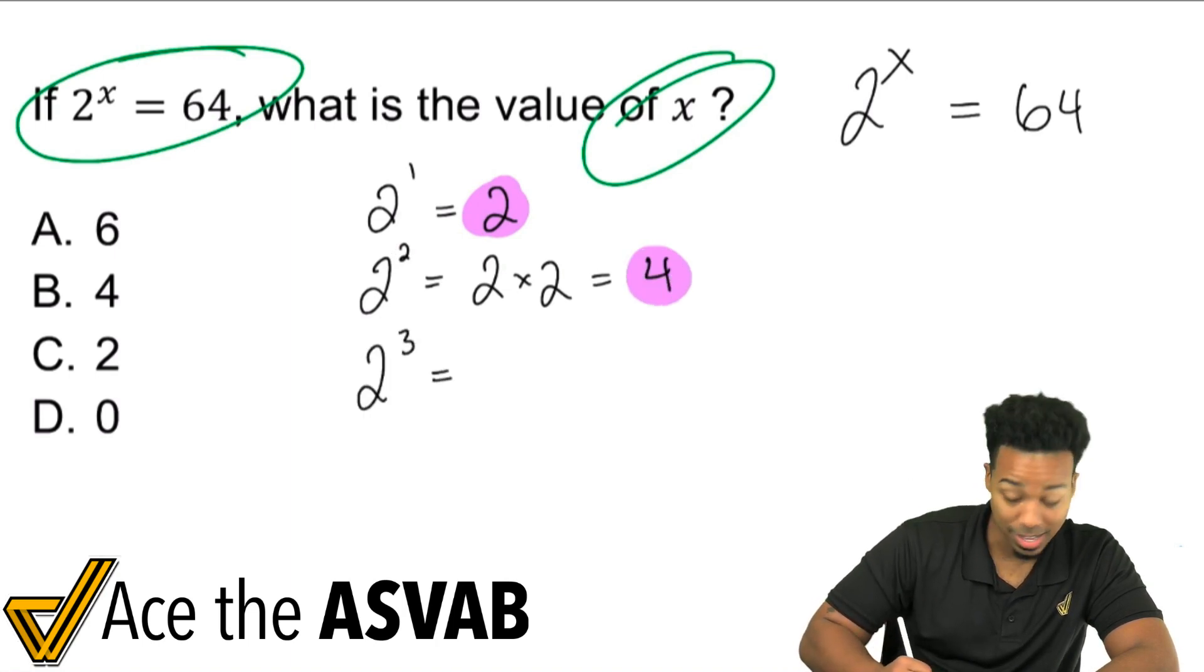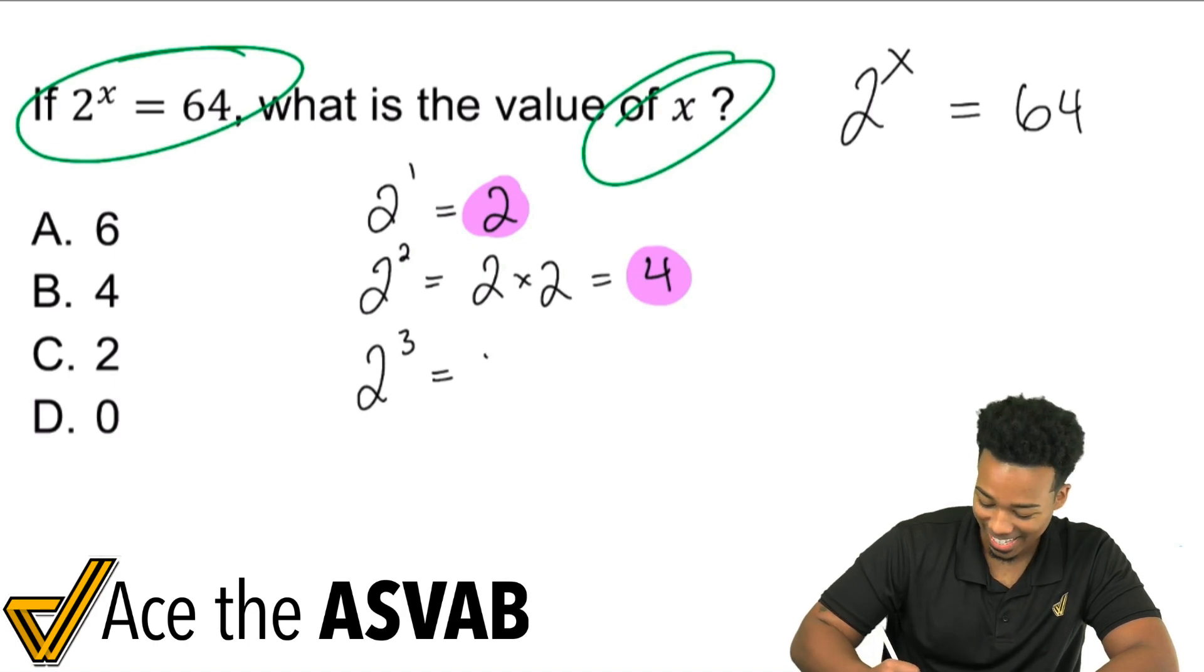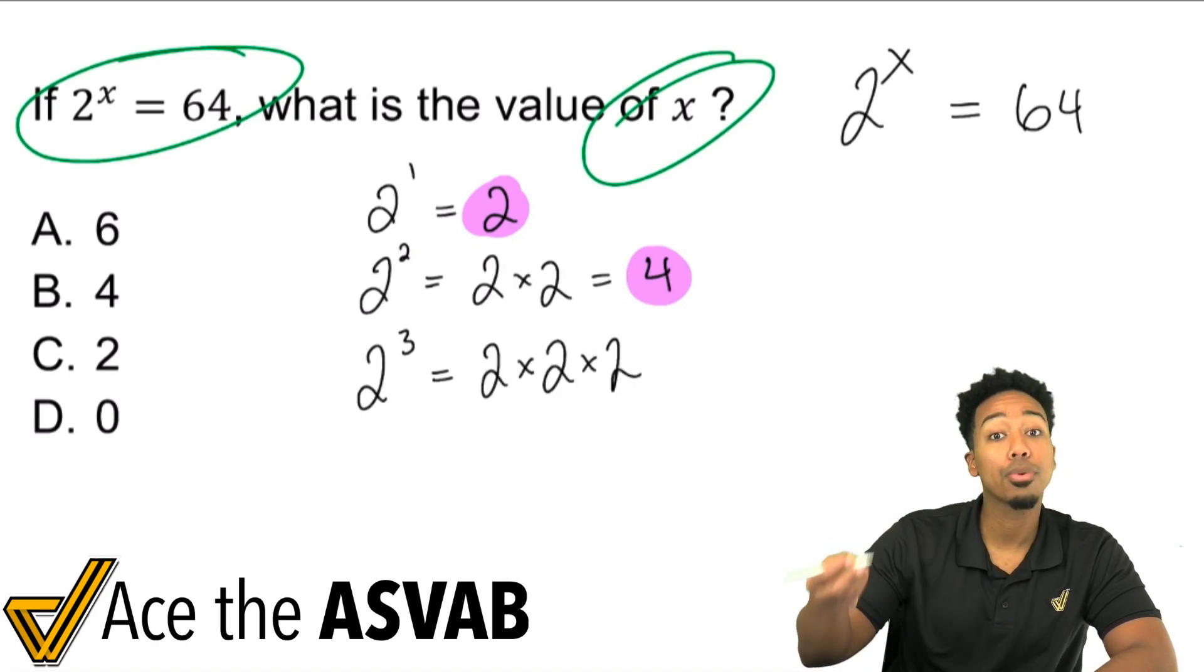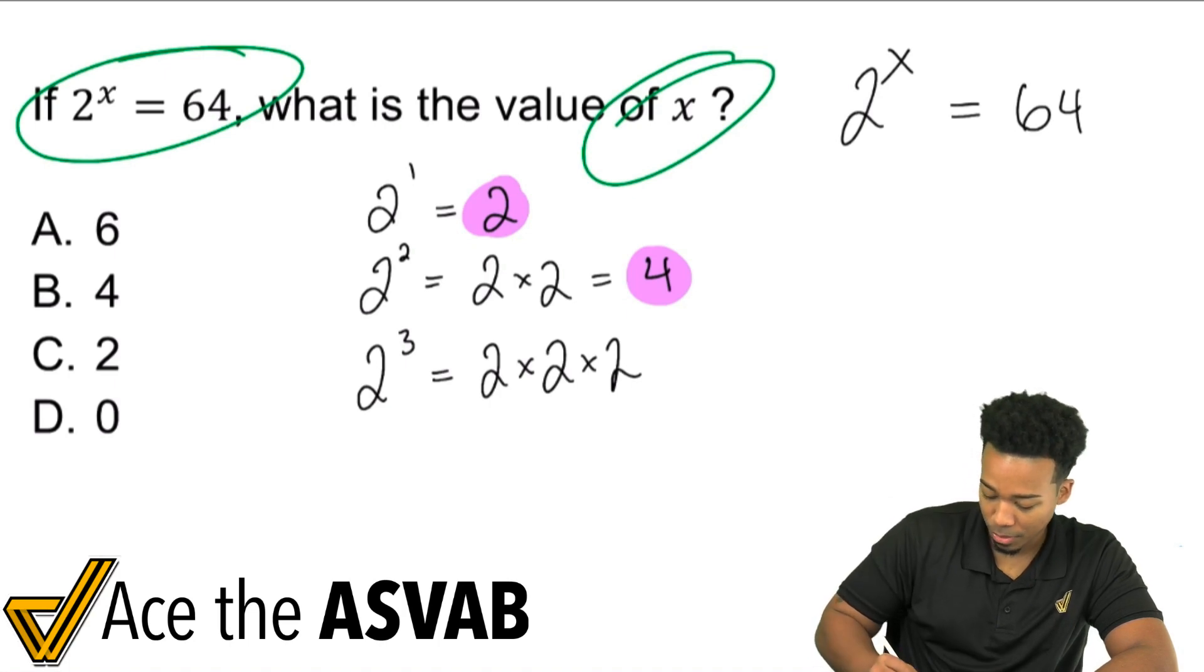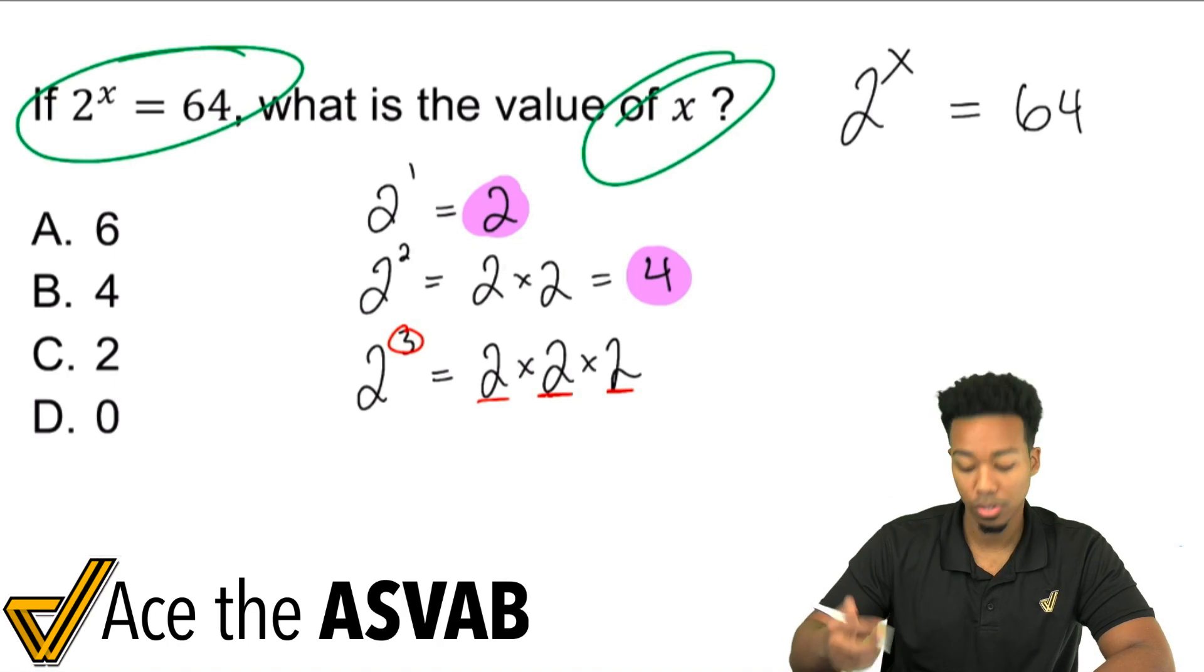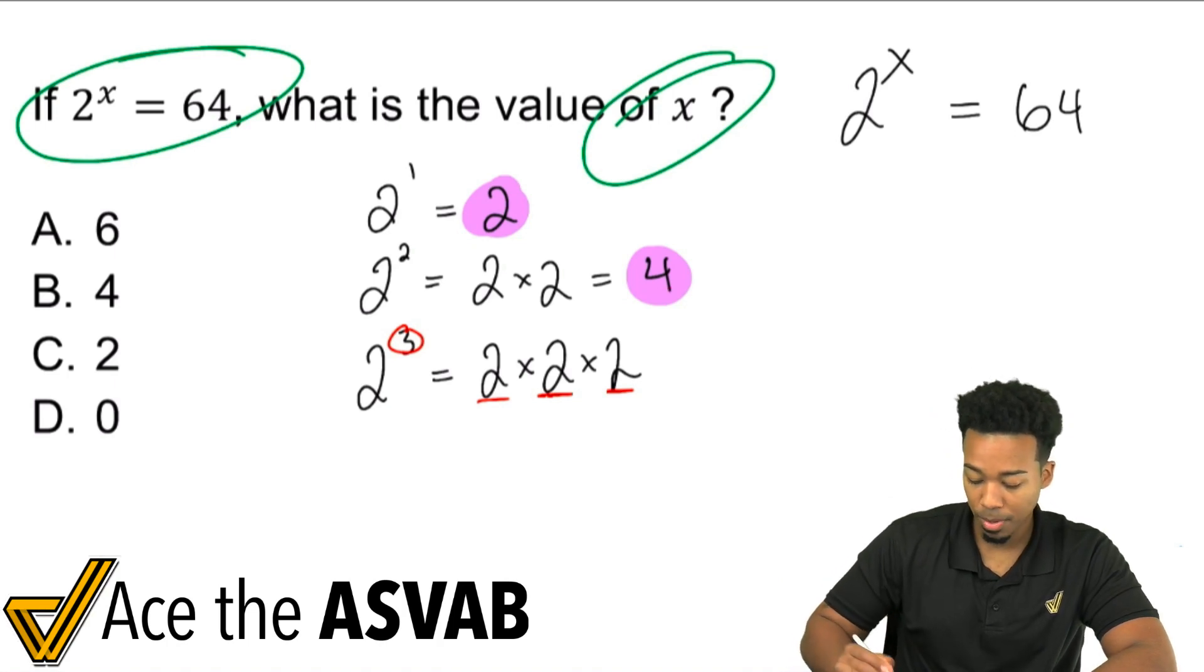2 to the power of 3 is not going to be 6. It's going to be 8, because you're going to have 2 times 2 times 2, three times. You see that the power of 3? You see it listed 3 times. So since 2 times 2 is 4, multiply that by 2 again, and you get 8.